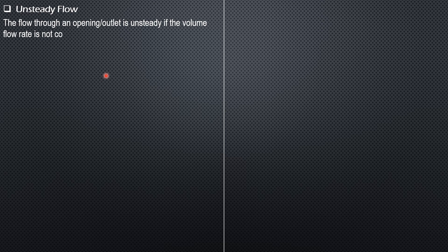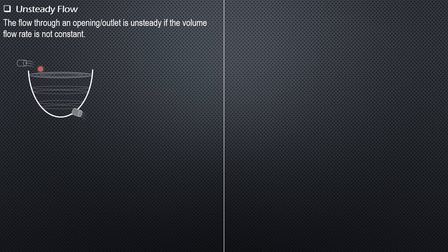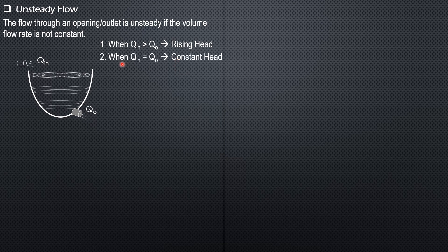Consider a reservoir with an outlet: we have an inflow rate Q_in and an outflow rate Q_out, where the outlet may be an orifice or a short tube. When Q_in is greater than Q_out, the head will rise. When Q_in equals Q_out, the head is constant. We concentrate on the third case: when Q_in is less than Q_out.